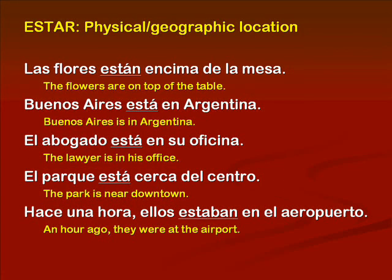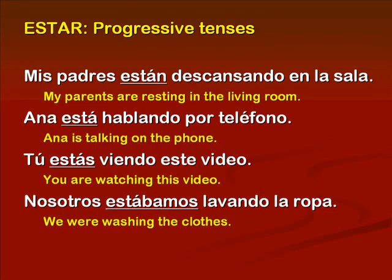One key usage of estar is to refer to physical or geographic location, whether temporary or permanent. For example: las flores están encima de la mesa. Buenos Aires está en Argentina. El abogado está en su oficina. El parque está cerca del centro. Hace una hora, ellos estaban en el aeropuerto. Estar is also used to form the progressive tenses, which indicate that an action is or was in progress at a specific point in time. For example: mis padres están descansando en la sala. Ana está hablando por teléfono. Tú estás viendo este video. Nosotros estábamos lavando la ropa.